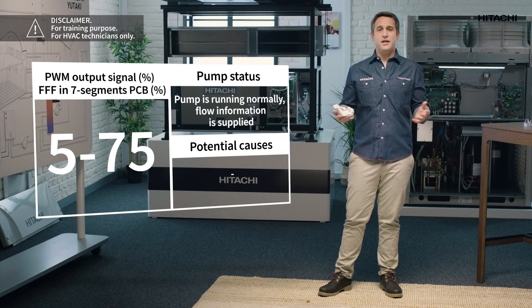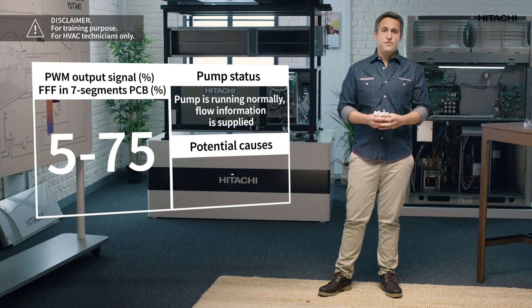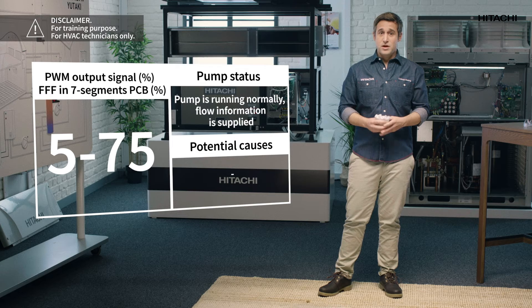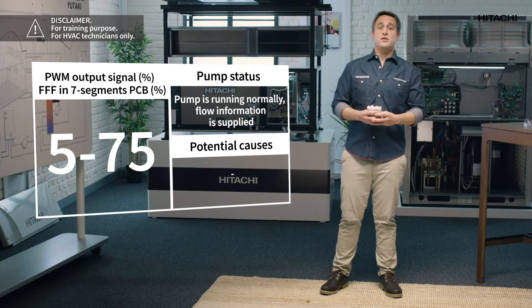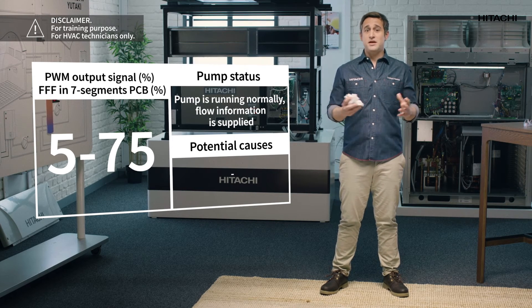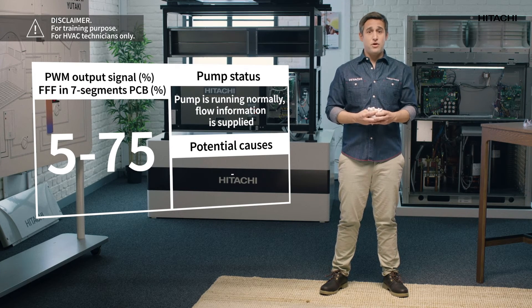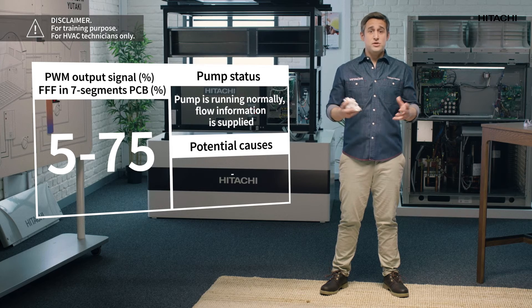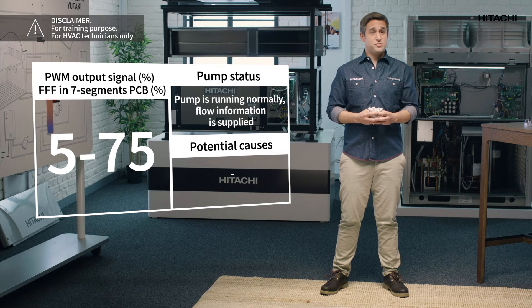Values of 80, 85, and above are fixed values — each value means a different problem of the pump itself. Notice that when the pump is sending a problem signal, the PCB cannot read any flow rate, so the LCD display shows zero cubic meters per hour.